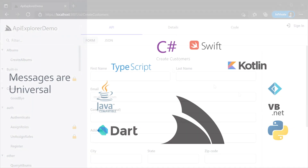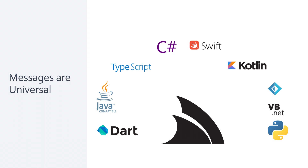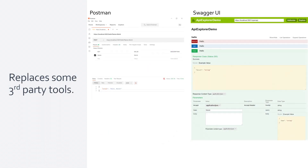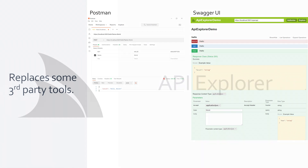ServiceStack's message-based design enables high-level functionality to be driven by the fundamentals of your API. API Explorer is yet another example of how well-defined message-based APIs can be leveraged to generate value right from the beginning. By adding additional metadata attributes straight onto your message contract DTOs, everything is in one place. This approach avoids any sync or translation issues since you don't need to maintain separate text-based specifications that can be time-consuming, error-prone, and complex to integrate with third-party tooling.